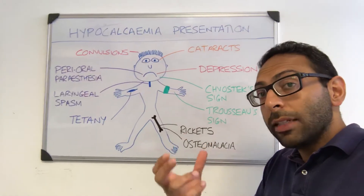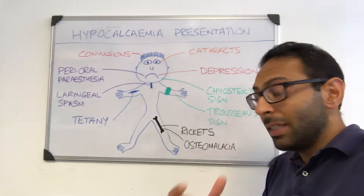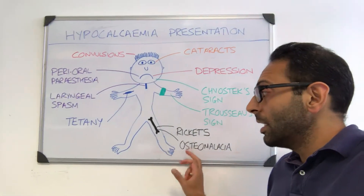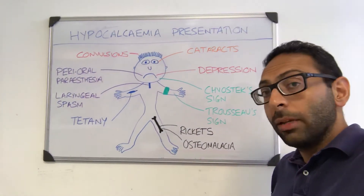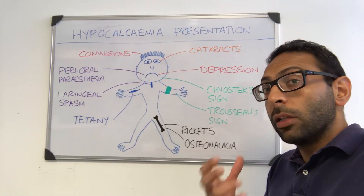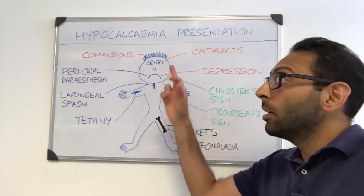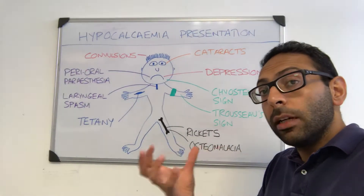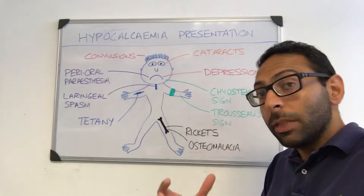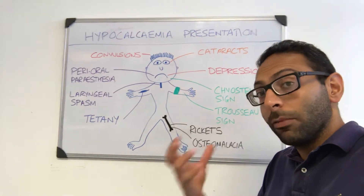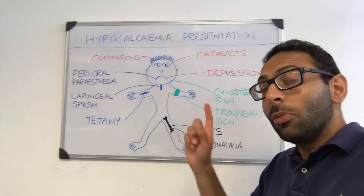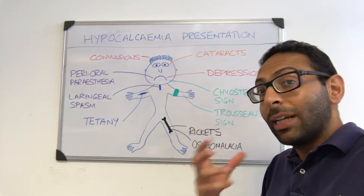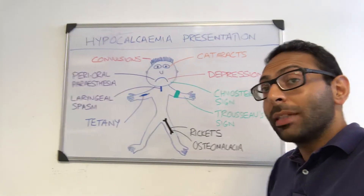Also with low calcium you can get low vitamin D, so you can get things like rickets and osteomalacia in the bones as well. So normally a low calcium level can affect nerves and muscles, but it can present in many different ways. There's a lot more teaching like this on our AKT webinars and audiobooks. I hope this helps.